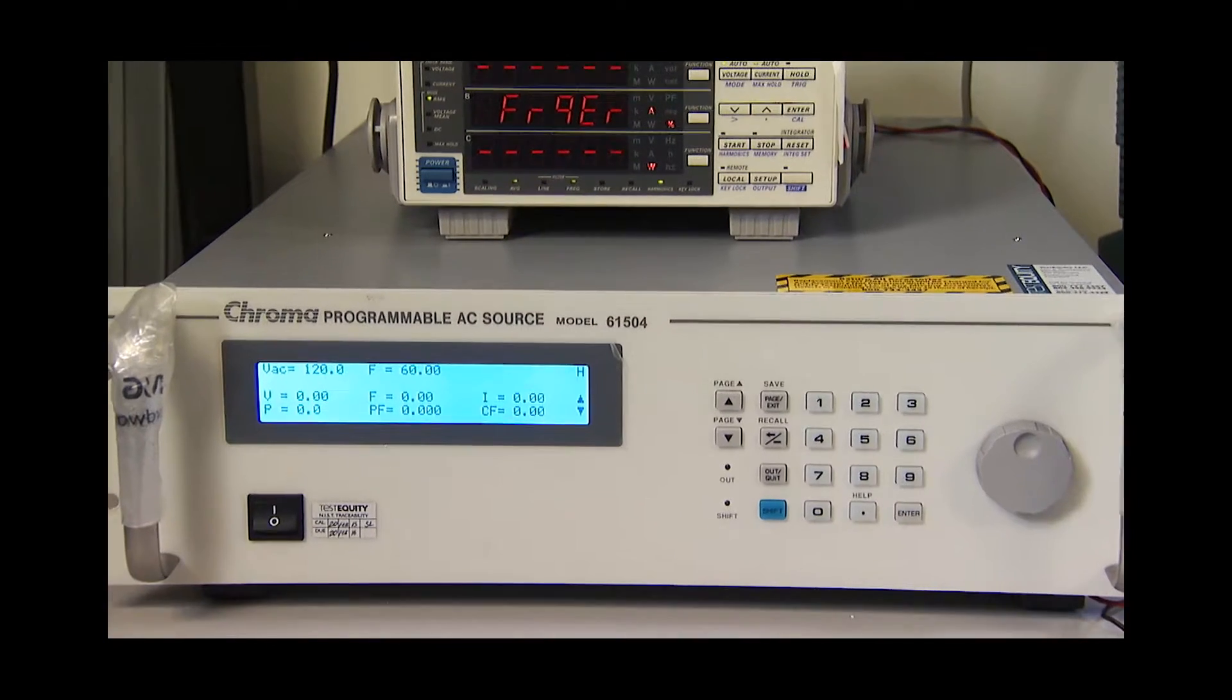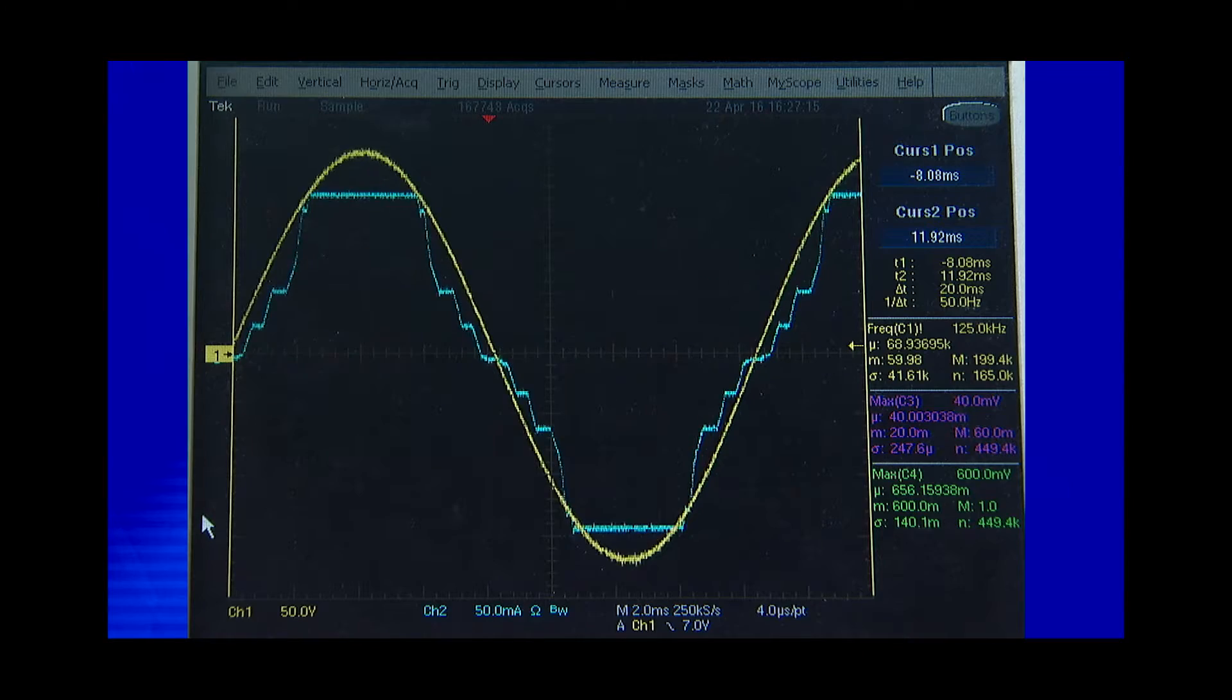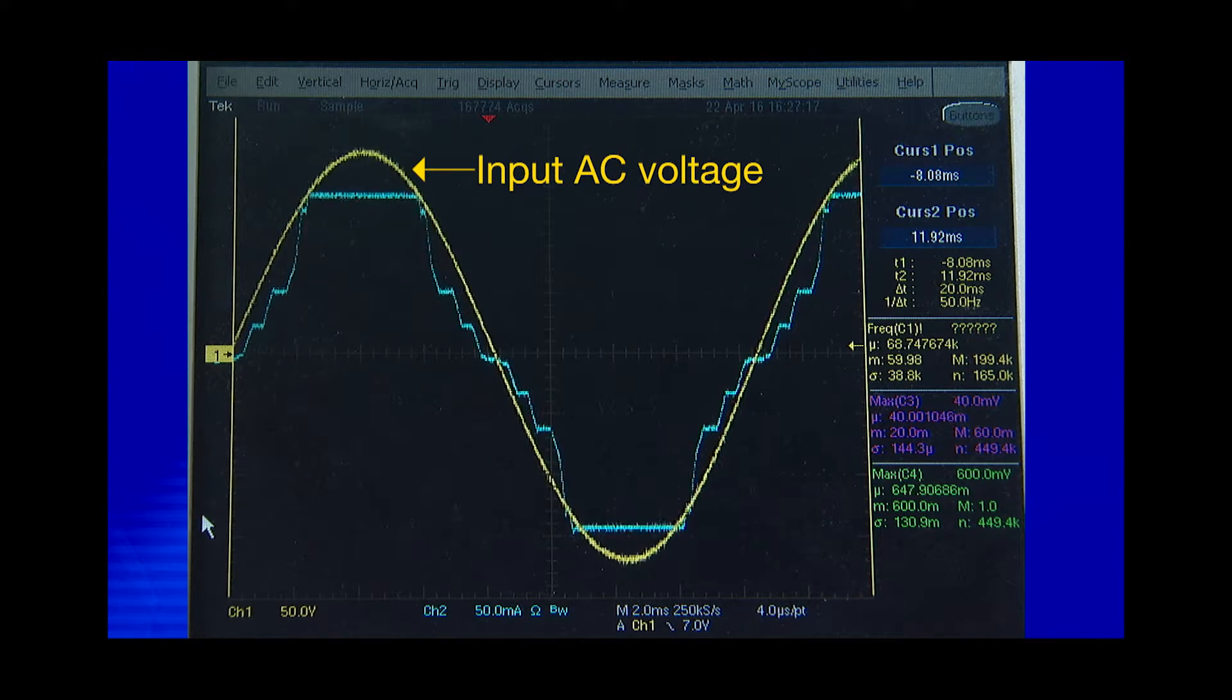The board is fed with 120V, typical of North American line voltage. Channel 1 of the oscilloscope is the input AC voltage while channel 2 is the input current.